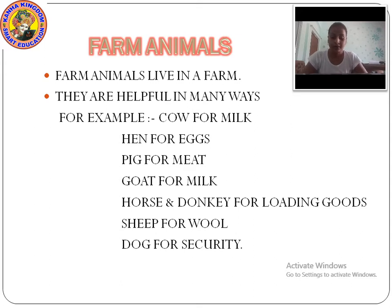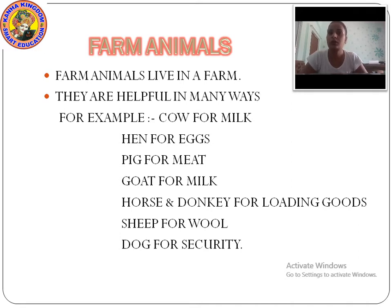Farm animals are very helpful to us. How are they helpful to us? For example — cow for milk, hen for egg, pig for meat, goat for milk, horse and donkey for loading goods, sheep for wool, and dog for security.